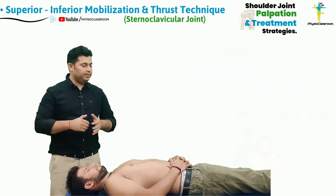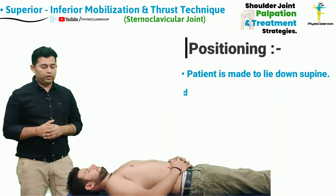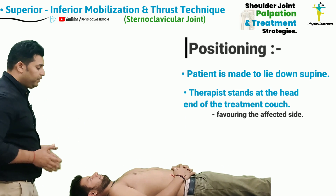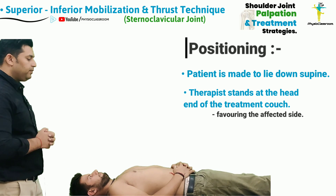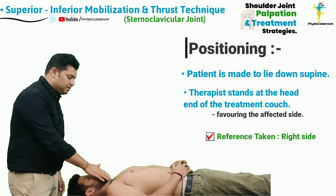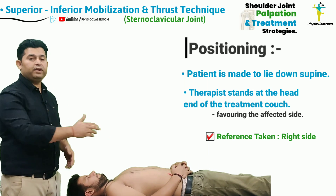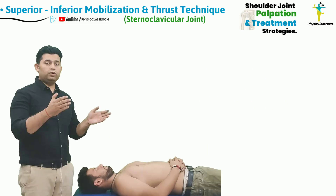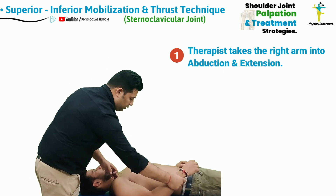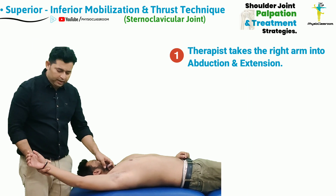One way in which the therapist can deliver the superior to inferior sternoclavicular joint mobilization and thrust is to make the patient lie down in the supine lying position. The therapist is going to stand at the head end of the treatment table, favoring the side that needs to be treated. For demonstration purposes, let's assume that the patient's right-sided sternoclavicular joint play from superior to inferior is affected.